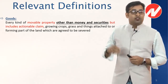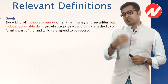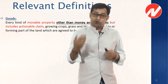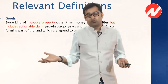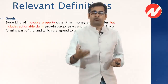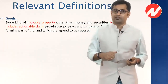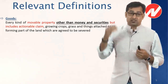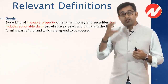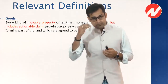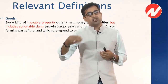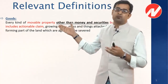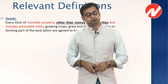If actionable claims are considered goods, then when you give someone a cheque in payment for goods, you have also given them goods — making it a barter rather than a sale transaction. That is why some clarification and distinction had to be created. The key question is: why was actionable claim added to the definition of goods in the first place?